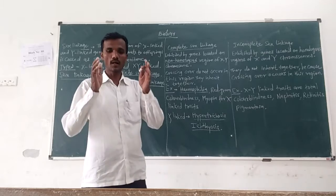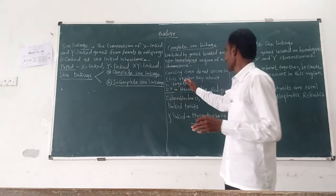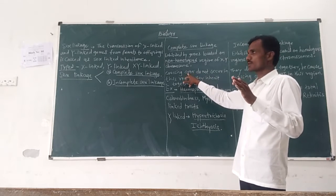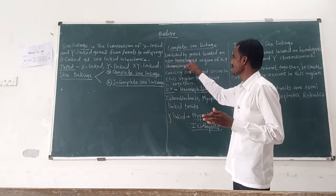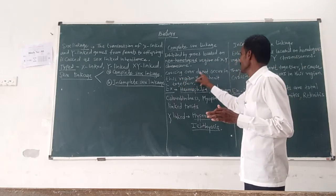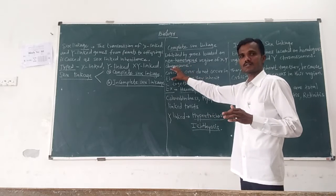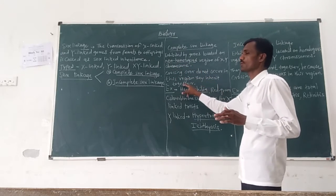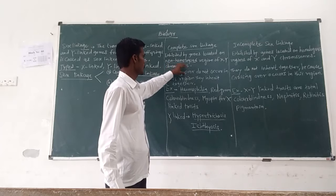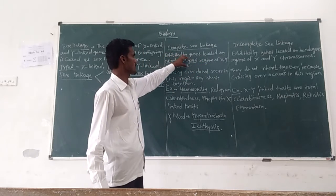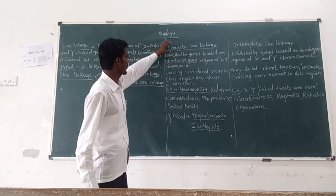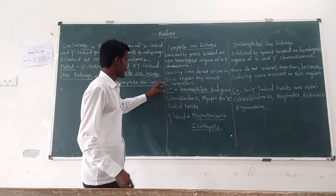In the case of complete sex linkage, crossing over does not occur in the non-homologous region of the X and Y chromosomes. Because crossing over does not occur in this non-homologous region, such sex linkage is called complete sex linkage.